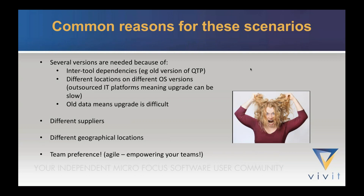Other reasons for different instances included different suppliers — outsourcing to three different suppliers who aren't supposed to talk to each other, yet you still need to share defects. Different geographical locations with offices in Germany, France, the States, and Singapore. And then Agile came along: empowering teams to use whatever makes them most efficient — which was great for teams but made cross-tool reporting even harder.